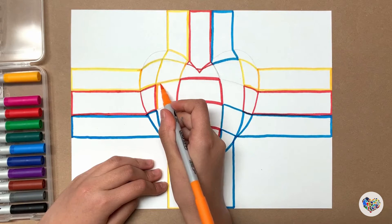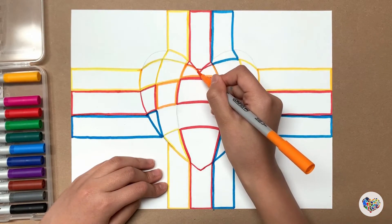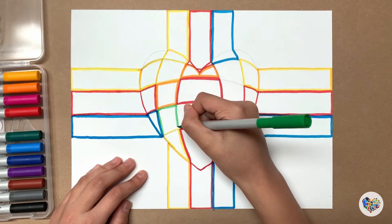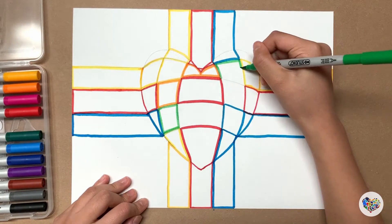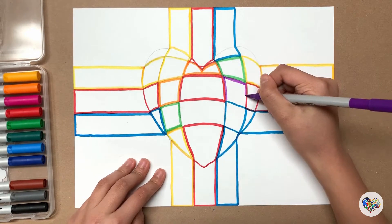The area where red and yellow meet is painted in orange. The area where yellow and blue meet is painted in green. The area where red and blue meet is painted in purple.